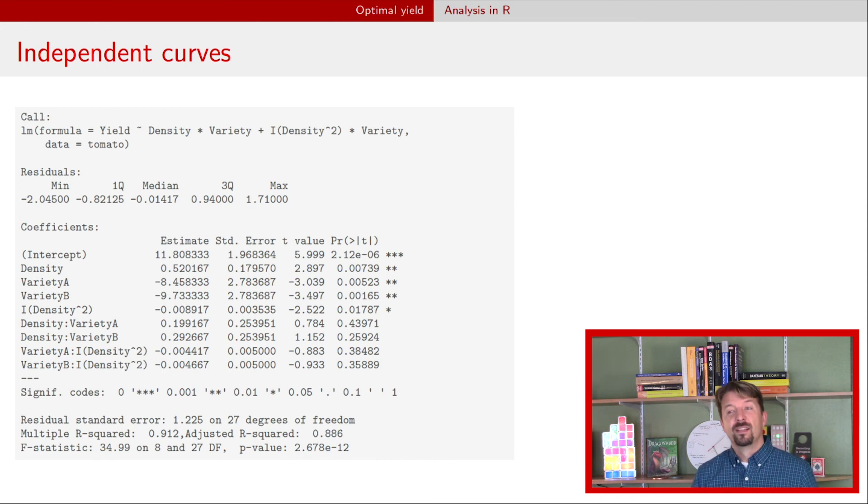And so this was just a demonstration of how what scientific question you have will affect the analysis that you do. In this case when we're trying to find a maximum with regard to one of the explanatory variables, and if that explanatory variable is continuous, then we're going to use a quadratic in that variable in order to find a maximum.